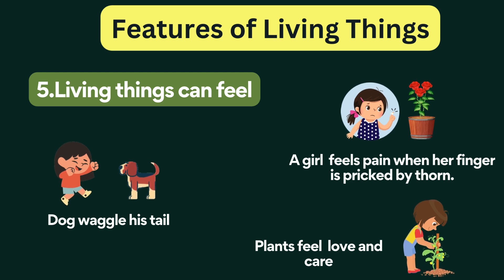Living things can feel. All living things can feel. Human beings have five sense organs: eyes, nose, ears, tongue, and skin. Just like humans, animals and plants also feel. A dog waggles his tail. A girl feels pain when her finger is pricked by a thorn. Plants feel love and care.